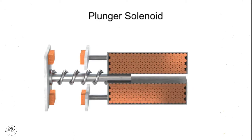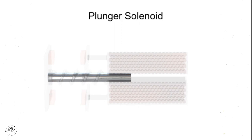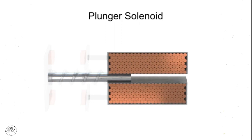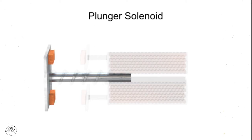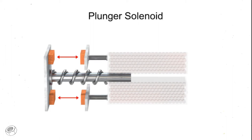A plunger solenoid contains a movable iron rod that is inserted into a coiled cylinder. The rod is connected to a plate with two contacts. With the aid of a spring, the contacts are normally open.